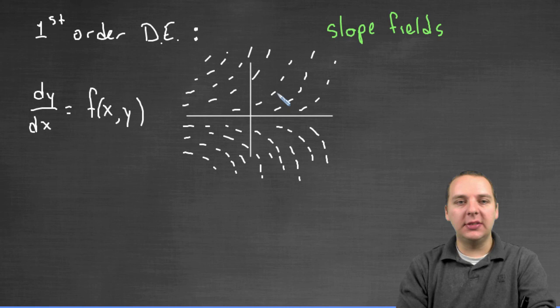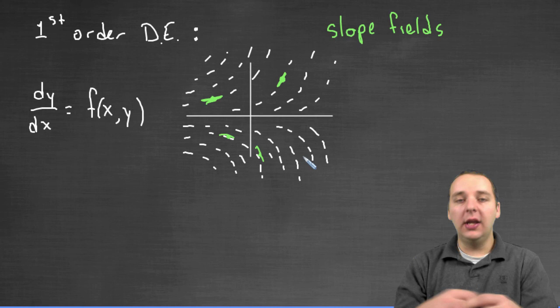And so here you can kind of see what I was saying. If you pick a specific point, then the point that, and you plug it in the differential equation, dy/dx would tell you what the slope needs to be right here, or what the slope needs to be right here, or right here, or right here, or anywhere in the plane.